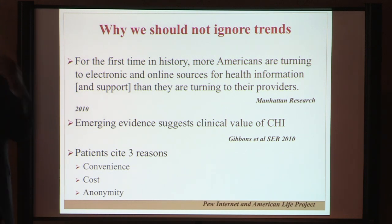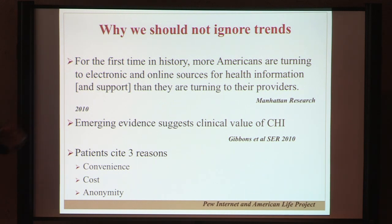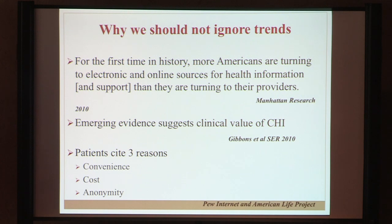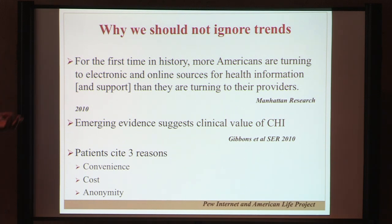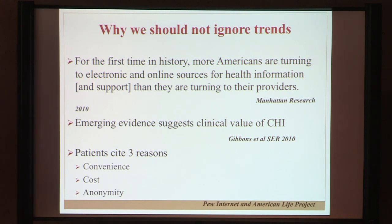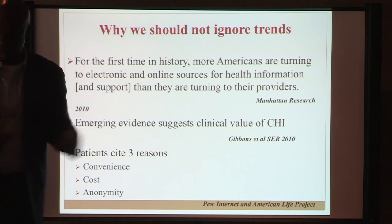There's emerging evidence that suggests the value of consumer health informatics. We've done one of the first systematic reviews of the literature. Patients cite three main reasons why they're going in this direction — and these are three things our healthcare system does very poorly. One is convenience: they don't have to take off from jobs that don't pay you if you don't come to work. They can do it at two in the morning if they need it. The healthcare system requires you to come when the office is open. Two is cost — if you've got internet service, you basically have it. And three, they believe — erroneously, but they do believe — that there's some anonymity there, so they will say things and ask questions through online resources that they don't tell us.